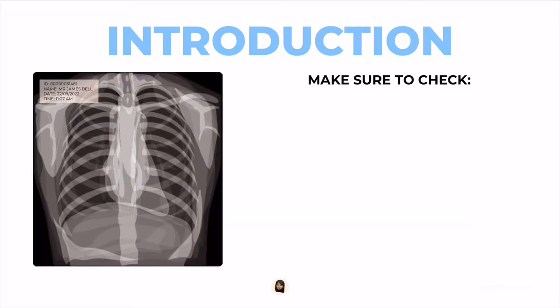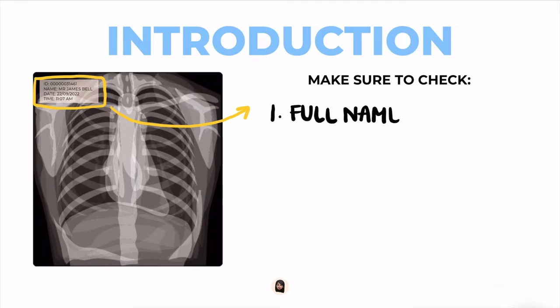Let's begin with the introduction and checking the x-ray details. In every x-ray, probably on the top left, there are three key labels, and it's important to double check all of them. Number one, that's the patient's full name, number two, the date, and number three, the time. Once you confirm all these three details, then you can move to the next step.